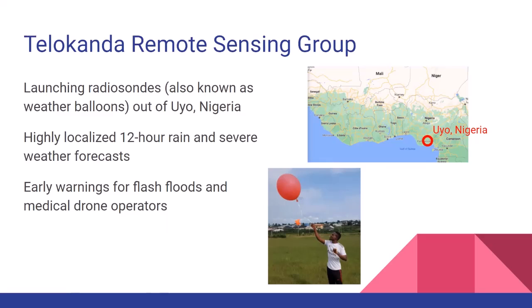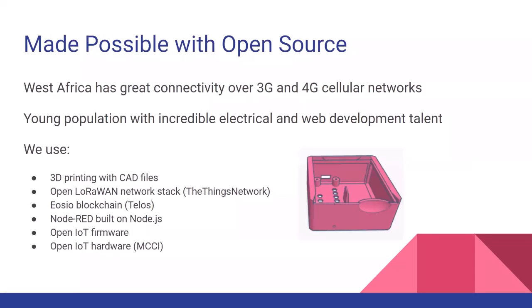We also use the data to make forecasts for drones that are highly dependent on rain and wind at the boundary layer. You can imagine a drone delivering medical supplies or possibly prescription medication to a remote area during COVID-19. Our company is trying to forecast a city-wide local forecast for those drones, and all of this is made possible with open source.